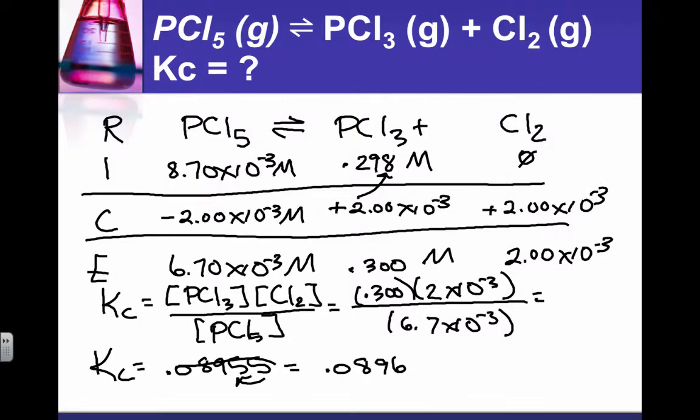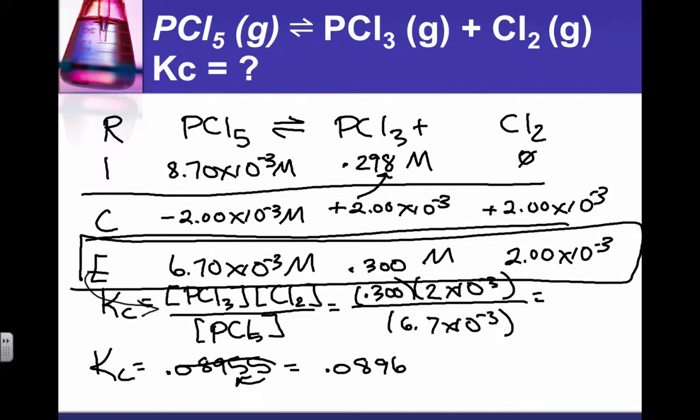So when you're given an equilibrium value for one thing, that allows us to use stoichiometry to figure out the equilibrium value for everything else that we can put in and solve the problem. So it wasn't as bad as it seemed. So now you can tackle those problems on your own.